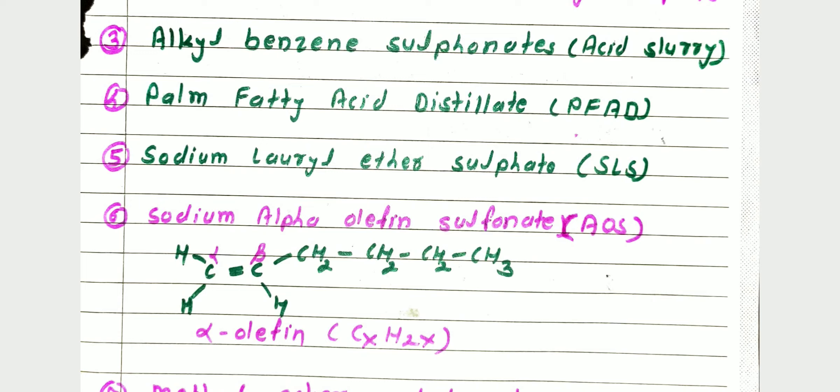AOS is prepared by sulfonation of alkyl having a double bond at the alpha position — these are alpha olefins, with alpha and beta double bonds present. The average length of the carbon chain in alpha olefin is 14 to 16 or 14 to 18 carbons. The general molecular formula of olefin sulfonate is R-CH=CH-(CH₂)ₙ-SO₃Na. It has remarkable detergency, good wetting, and highly foaming properties, mainly useful in personal care products like cosmetic shampoos, bath and shower products.